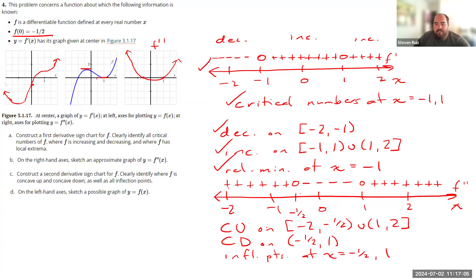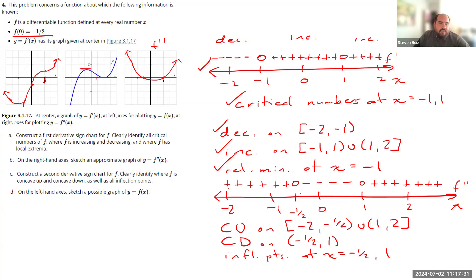Checking concavity: concave up from negative 2 to negative one-half — that appears to be the case. Also concave up from 1 to 2. Concave down from negative one-half to 1. So we have inflection points where concavity changes. There are many ways the graph might look, but as long as it encompasses all these properties — increasing/decreasing intervals, critical numbers, concavity, and inflection points — it's a valid answer.